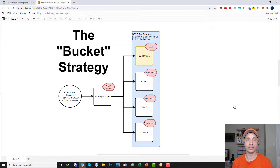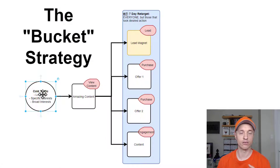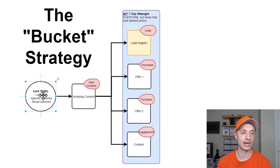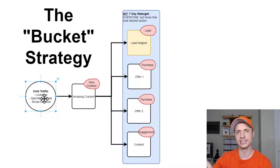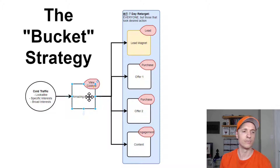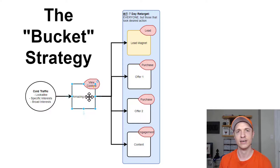So you start off with your cold traffic audience, bringing cold people that don't know who you are into your environment. What I typically do is set up three different audiences — like a lookalike audience, a specific interest audience, and a broad interest audience. I have another video on audiences and targeting, so look down in the description below for that. What I'm doing is bringing them to an amazing piece of content — a video on Facebook or a blog post.